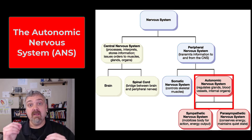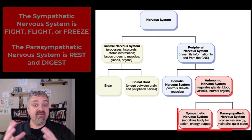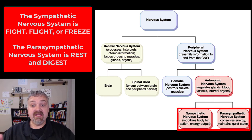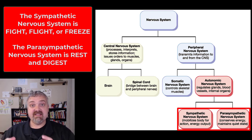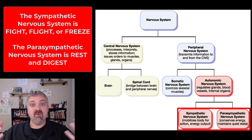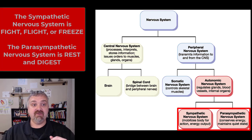The autonomic nervous system is a visceral motor system, so it controls the organs of the thoracic and abdominal pelvic cavity. That can be further broken down into the sympathetic division, which is known as the fight or flight system, and the parasympathetic division, which is rest and digest. We're going to compare and contrast the two before we do separate videos on each of those divisions.